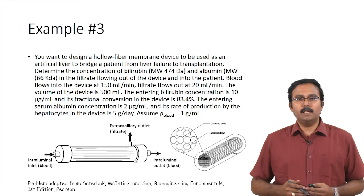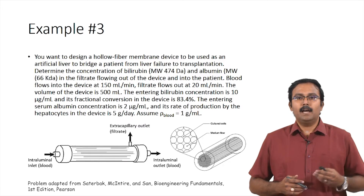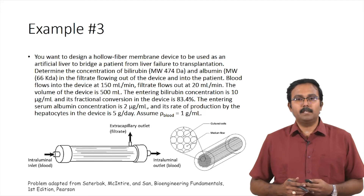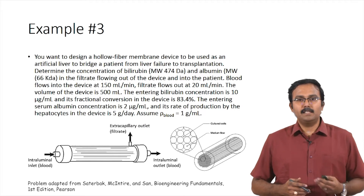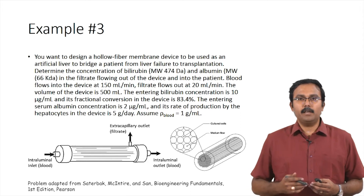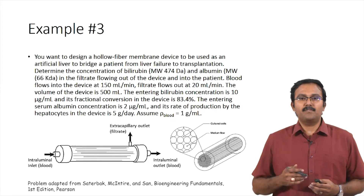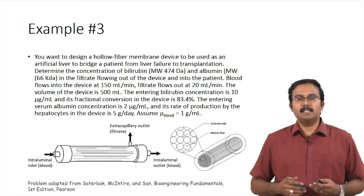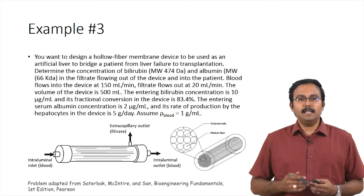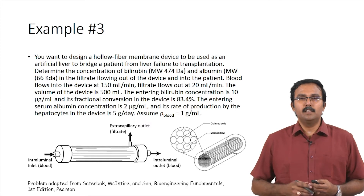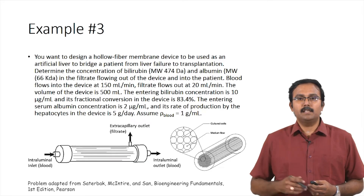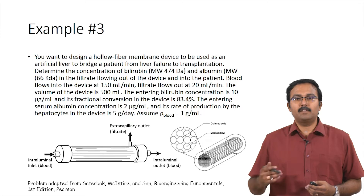Blood flows into the device at 150 ml per minute and filtrate flows out at 220 ml per minute. The volume of the device is 500 milliliters. The entering bilirubin concentration is 10 micrograms per ml and its fractional conversion in the device is 83.4%. The entering serum albumin concentration is 2 micrograms per ml and its rate of production by the hepatocytes in the device is 5 grams per day.